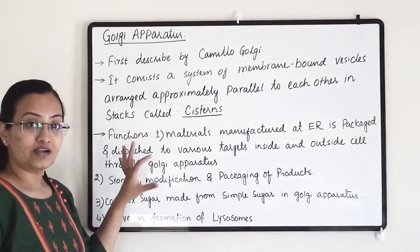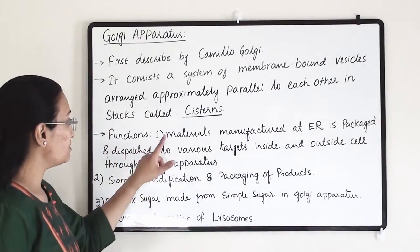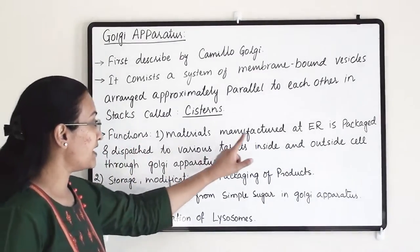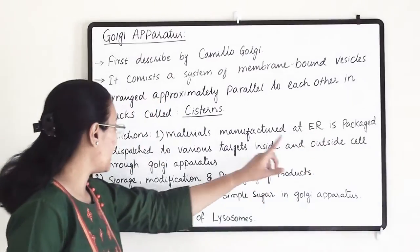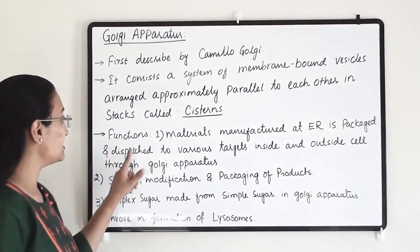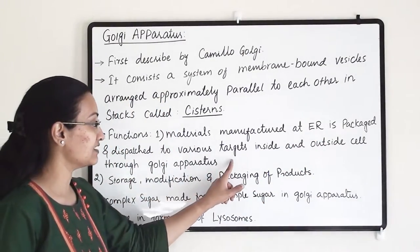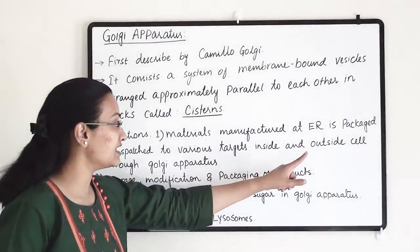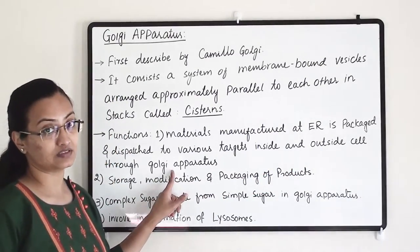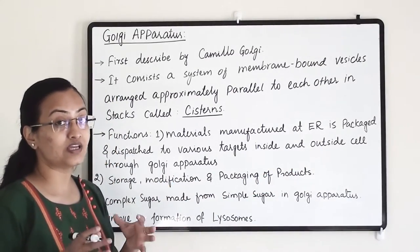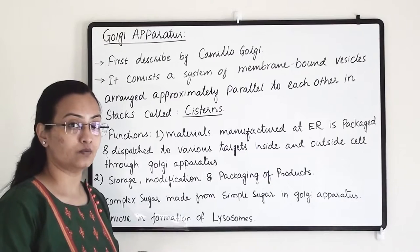Why are they attached with the ER? Because the materials manufactured at the ER are packaged and dispatched to various targets inside and outside the cell through the Golgi apparatus, and that is why they need to connect with the ER.